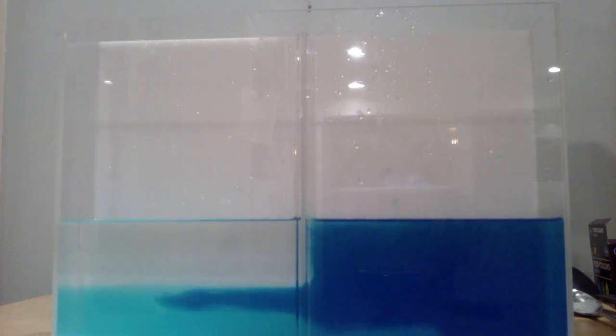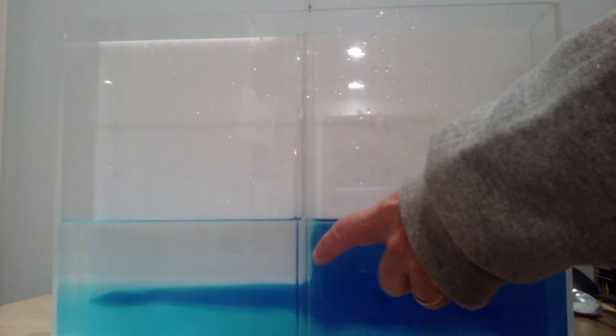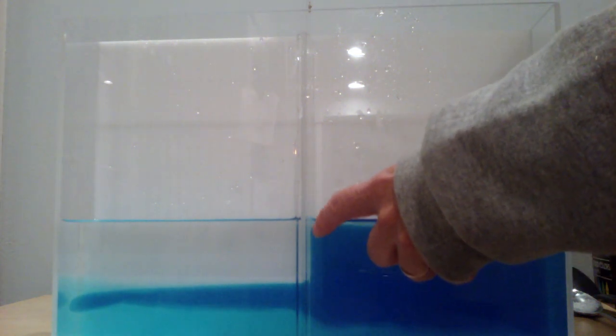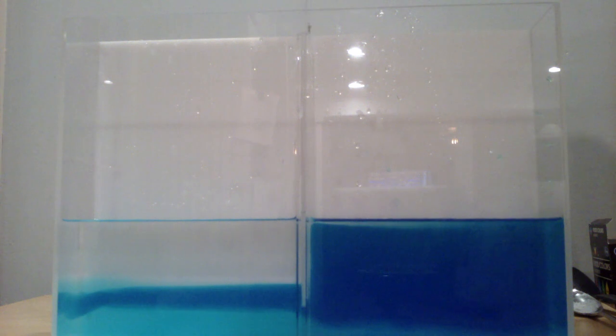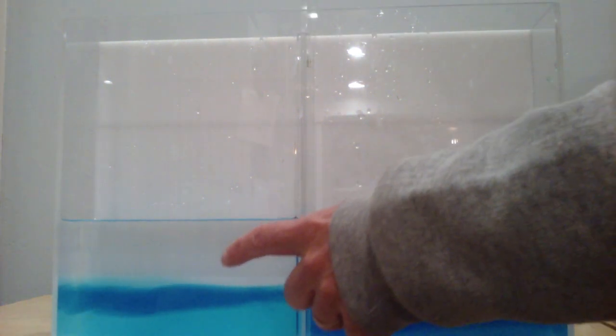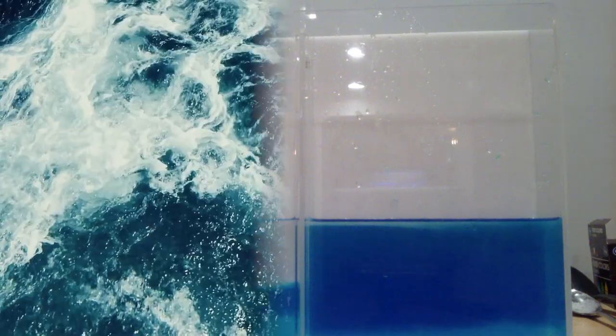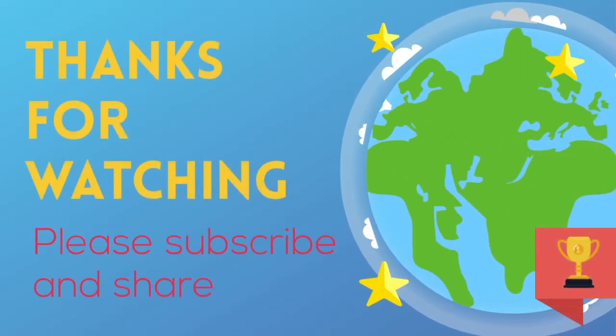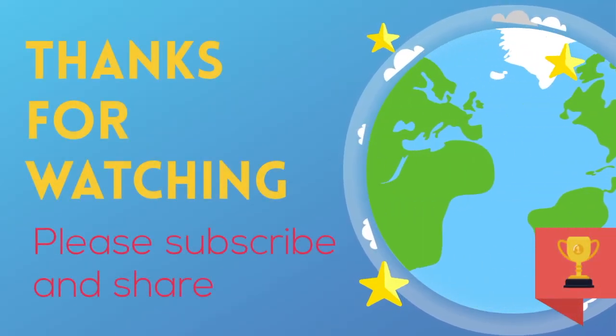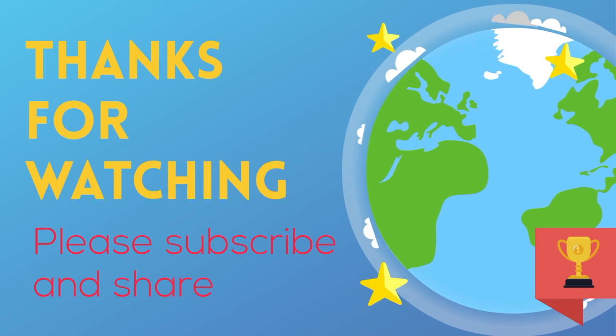We'll call it brackish water. We also have a convection current flowing this way, and we'll stop it. As you can see, we have fresh, brackish, and salt water. I hope that helps your understanding of convection currents. Thanks for watching. MooMath uploads a new math and science video every day. Please subscribe and share.